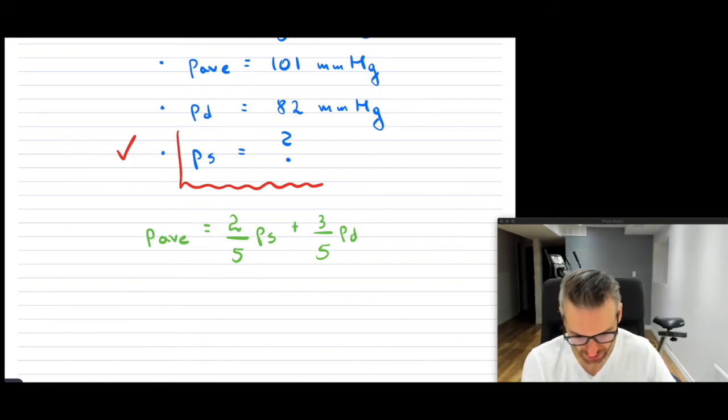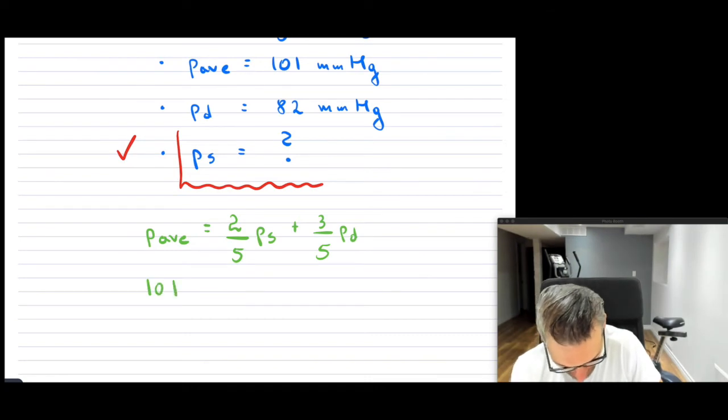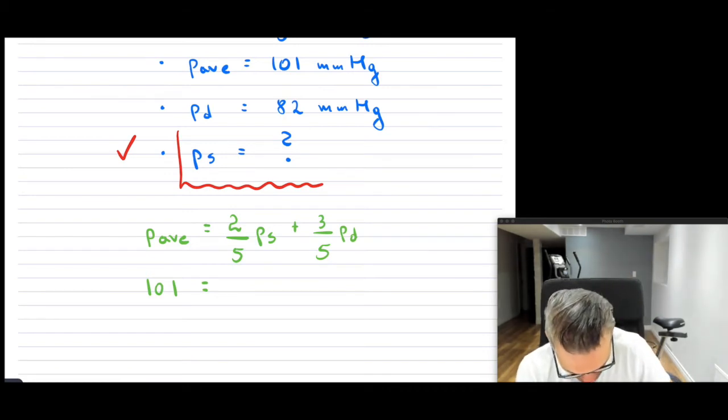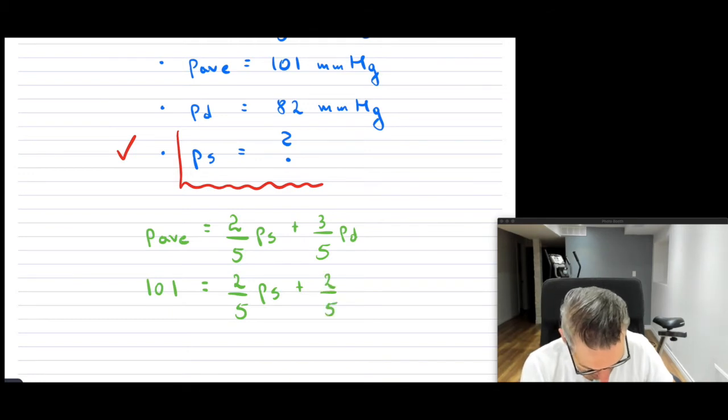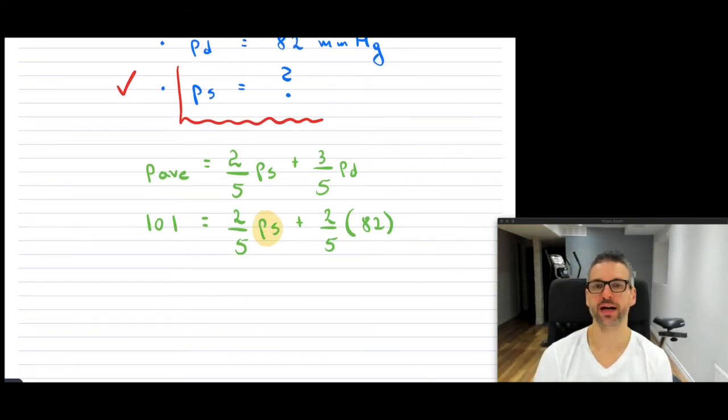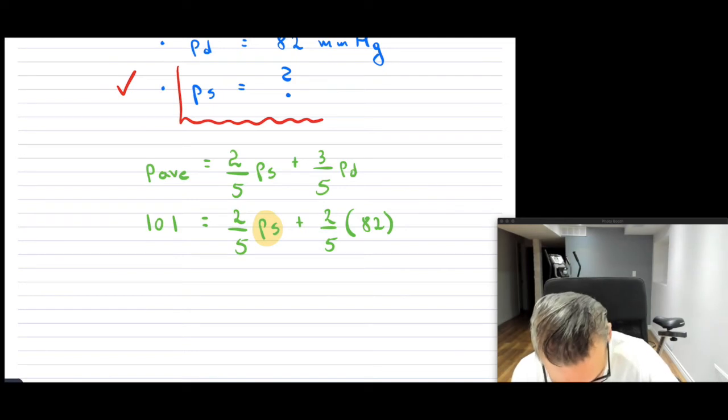I'm going to take this and substitute everything in. So what I have is my P average is 101. Notice I do have consistency in units because both are in millimeters of mercury. I don't have PS, so I'm going to leave this alone. But I'm going to substitute in here for PD, and that is 82. So now this problem is basically trying to isolate and solve for PS.